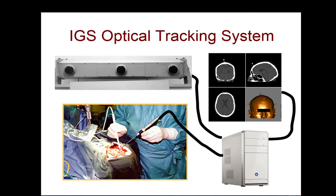This video is an animation showing how an image-guided surgery system links a preoperative image — in this case a CT image — to the patient's intraoperative anatomy. It allows you to navigate using the image as a guide or a map, as explained in pages 1 and 2 of the text and figure 1-1 on the left side.